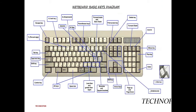Now let's learn more about the keyboard. There are so many keys in a keyboard. There are alphabet keys — Q, W, E, R, T — the QWERTY keypad. These are alphabet keys. And these are function keys.